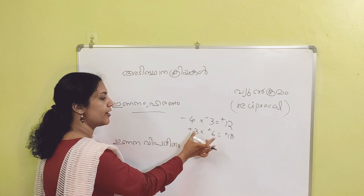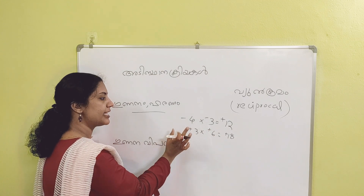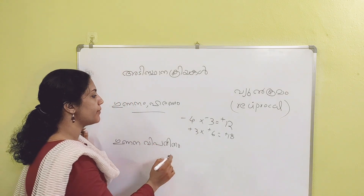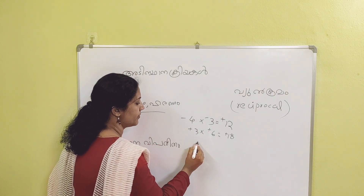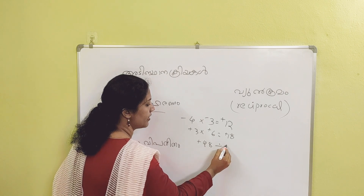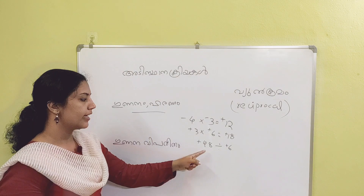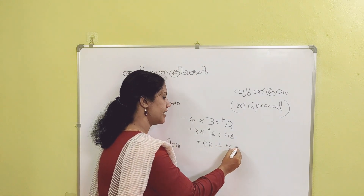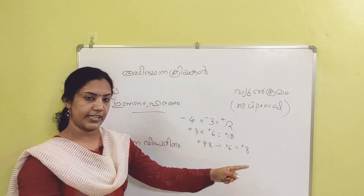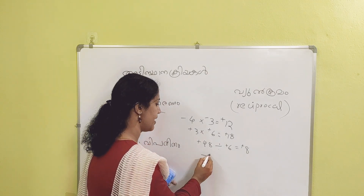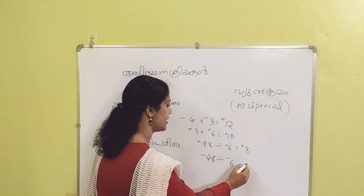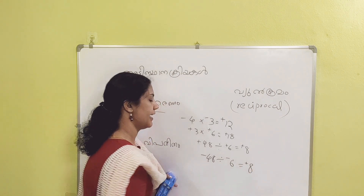If this is two negatives, then two negatives make a positive. Let's take a look at this: plus 48. Plus 6 — if you take a look at this, it's 8. It's positive. This is minus 48 — it's minus 6. What is that? Plus 8.